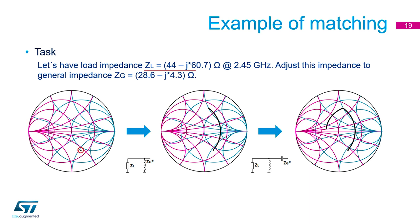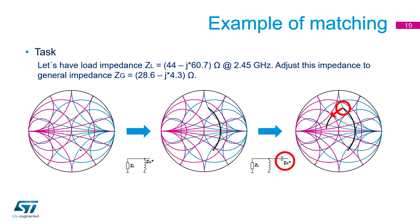In this case, we match the impedance 44 minus J60.7 Ohm to 28.7 minus J4.3 Ohm — this is matching of one complex impedance to another complex impedance. We must transform the load impedance ZL to the complex conjugated impedance ZG, which is 28.6 plus J4.3 Ohm. First, we move along the circle of constant conductance by a parallel inductor, and then move along the circle of constant resistance by a serial capacitance to the complex conjugate of the wanted impedance. We have fulfilled the matching law: the real parts are equal and the imaginary parts have opposite sign. The first case is in fact the same — only the imaginary part of the wanted impedance is equal to zero.